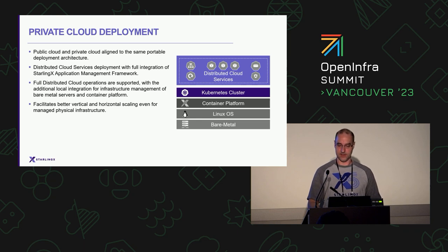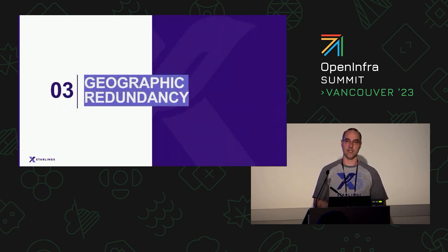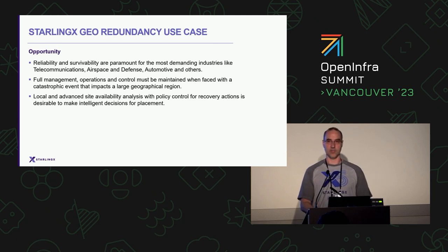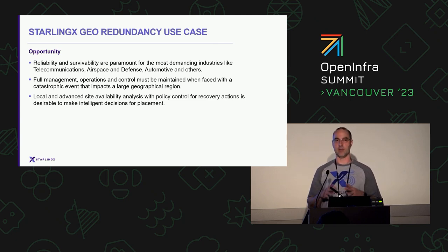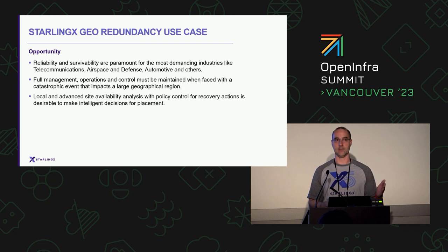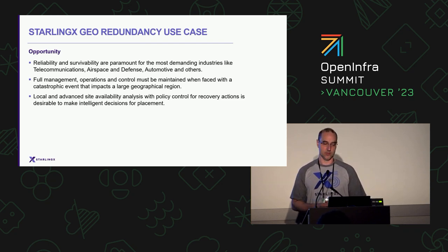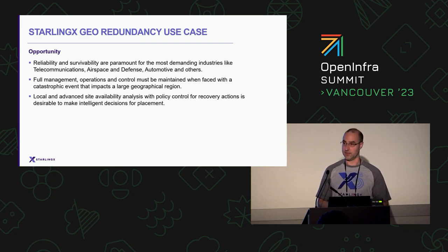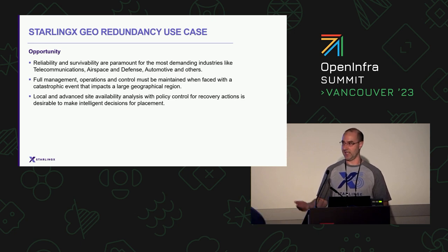Let's talk about the next major topic: geographic redundancy. This has a relationship to what I just discussed with public cloud, but what we're really being asked to do is provide an extra layer of survivability. We have a regional controller or public cloud deployment in one particular region, but we want those services to always be available — meaning full management, operations, and controls need to be maintained independent of any catastrophic event at an individual site.